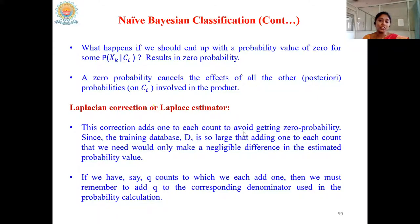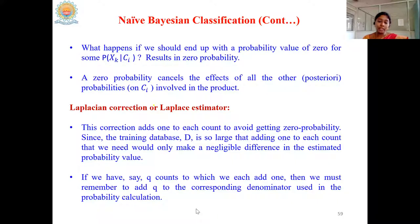This correction adds one to each count to avoid getting zero probability. Since the training database is large, adding one to each count would only make a negligible difference in the estimated probability values. They are saying that adding one to each count doesn't make much difference, so we can comfortably add one. If we add 1 to Q counts, we must also add Q to the corresponding denominator used in the probability calculation, to maintain balance.